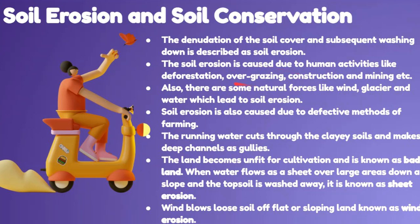Overgrazing is another cause — when cattle eat all the grass, there is no ground cover and soil erosion occurs. Construction and mining also cause soil erosion. There are also natural forces like wind, glaciers, and water that lead to soil erosion. Additionally, defective methods of farming with excessive use of fertilizers can also cause soil erosion.